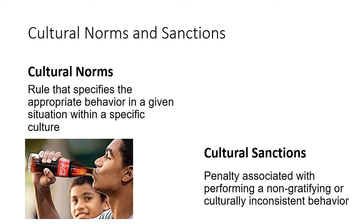Within each culture there are certain norms that we follow, and we learn those norms from different sources. A cultural norm is a rule that specifies the appropriate behavior we're supposed to follow in any given situation. If we don't follow it, that's a cultural sanction — penalties associated with behaving inconsistently with cultural norms. Think about being with older family members, like grandparents or older aunts and uncles, and doing something unacceptable — whether it's a look or getting pinched.